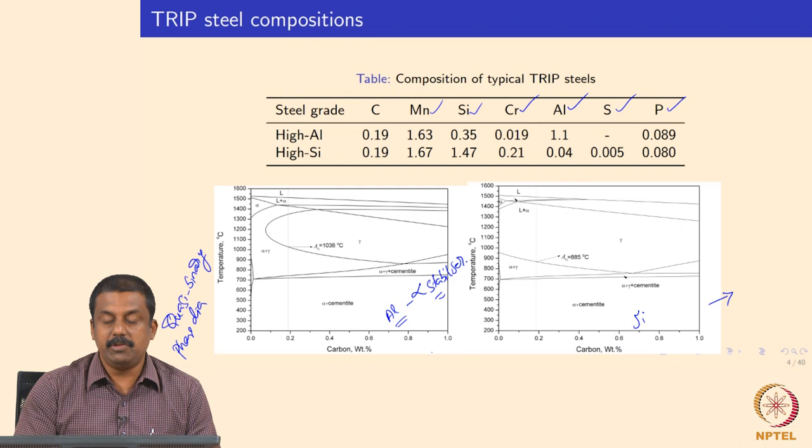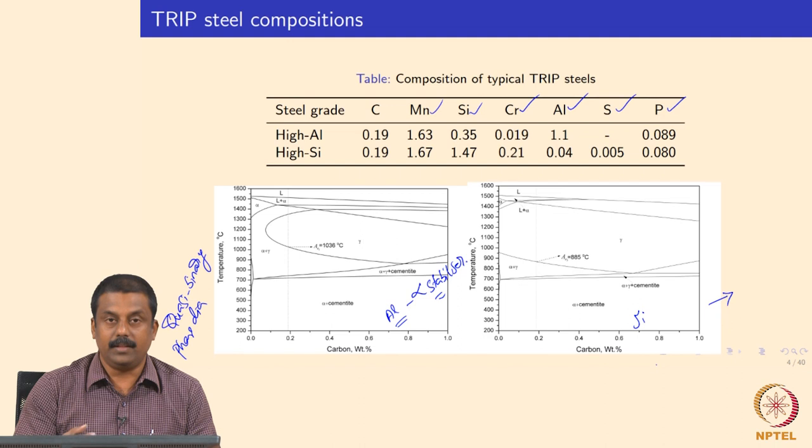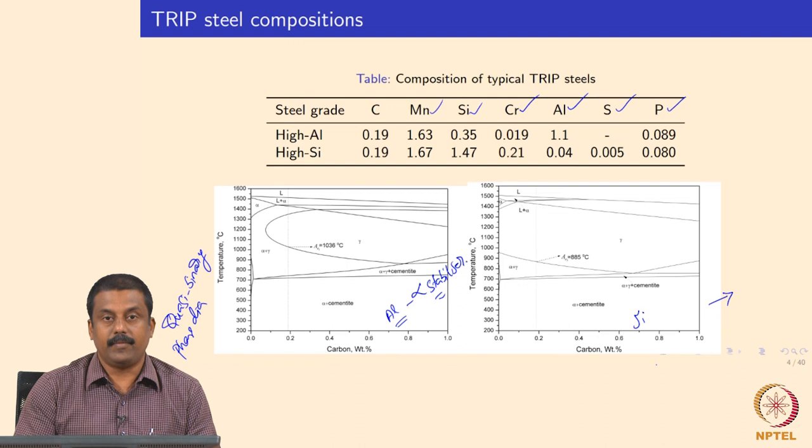We will now examine individual cases to see how the microstructure evolution takes place when a typical weld thermal cycle is applied, and how the weld microstructure can be entirely different based on individual composition, even though the base microstructures appear similar.